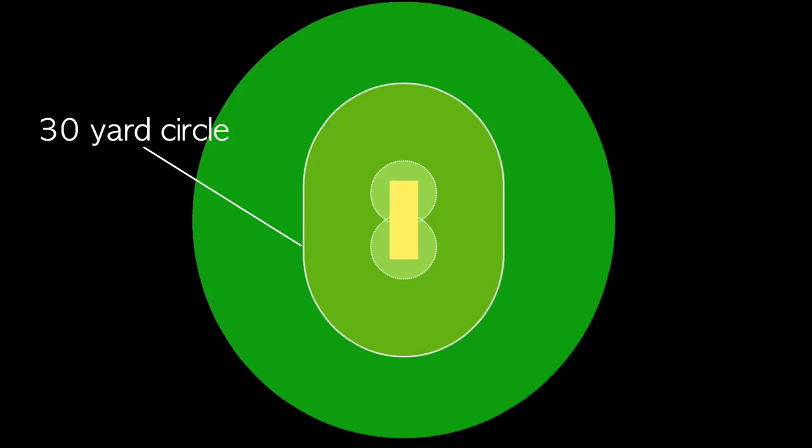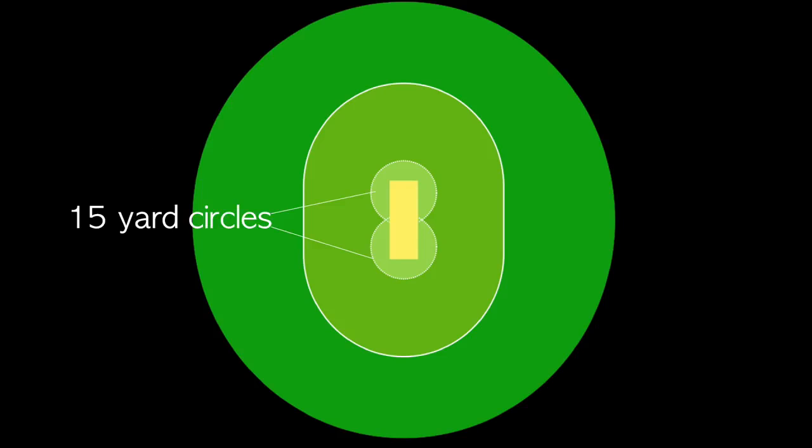Now let's see how exactly these rules differ from the old rules. So here's your cricket field, here is the 30 yard circle, and here is your 15 yard circle where the catching fielders are placed.